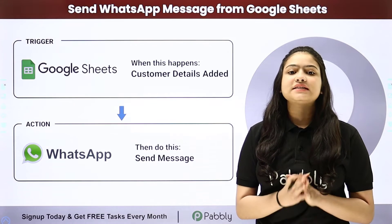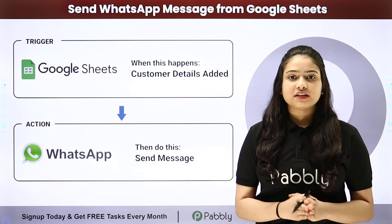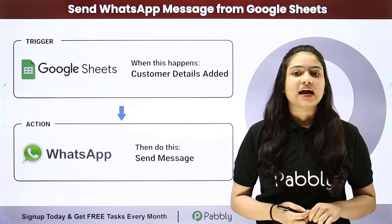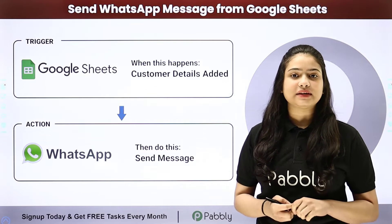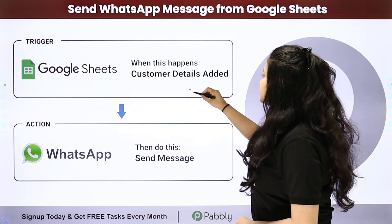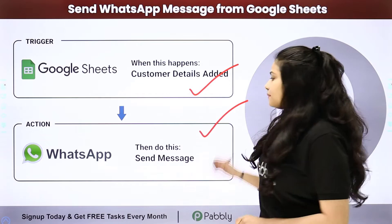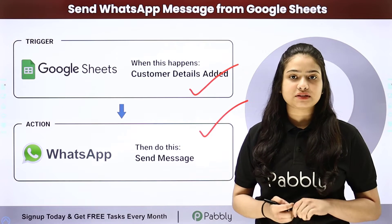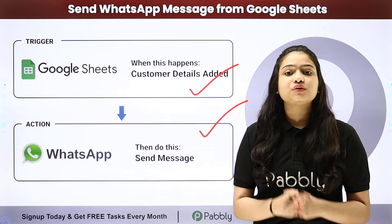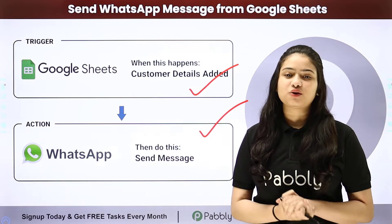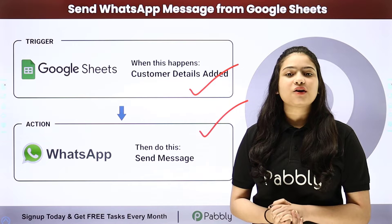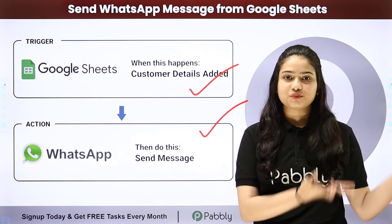So how are we going to automate this entire process? For this, we will have to set up a simple connection between Google Sheets and WhatsApp, and that we are going to do without any coding or programming skills with the help of PablyConnect. So here we have Google Sheets as our trigger and WhatsApp Cloud API as our action, and we are going to connect both of them using PablyConnect. Let me take you to my screen.